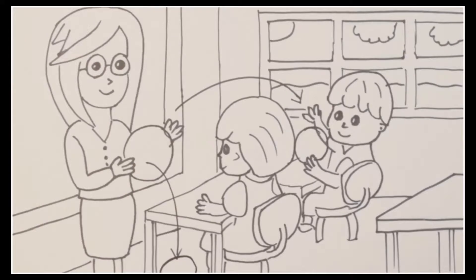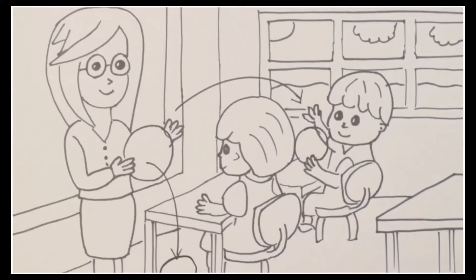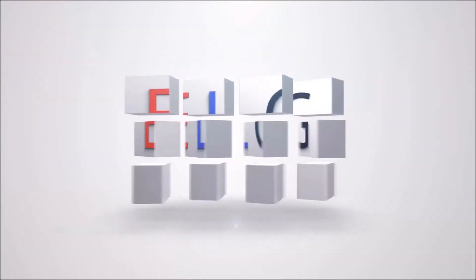Ask her, 'Did you catch the ball?' If she didn't catch the ball, have her answer in the negative: 'No, I didn't. I didn't catch the ball.' Continue the game until all of your students have had a turn.